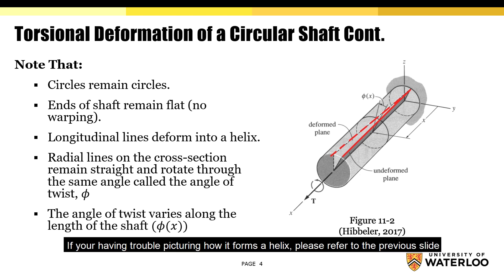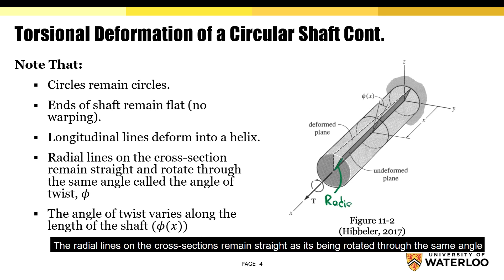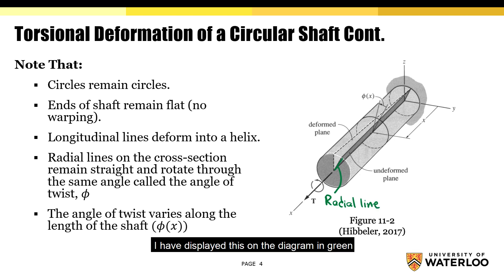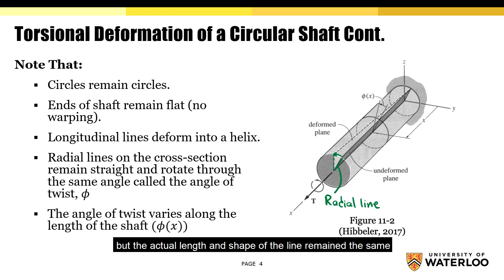If you're having trouble picturing how it forms a helix, please refer to the previous slide. It's important to note that the radial lines on the cross sections remain straight as they are being rotated through the same angle — displayed on the diagram in green. The solid green line represents the radial line before deformation, while the dotted green line represents the same radial line after deformation. The solid green line was rotated about an angle, but the actual length and shape of the line remain the same.